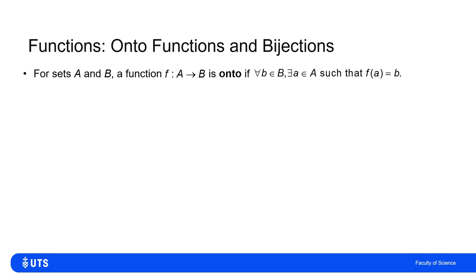If I have a function f which maps A to B, I would call that function an onto function if every element little b from set B has an a in set A such that f(a) equals b. This basically says each element in set B has one element that maps to it.